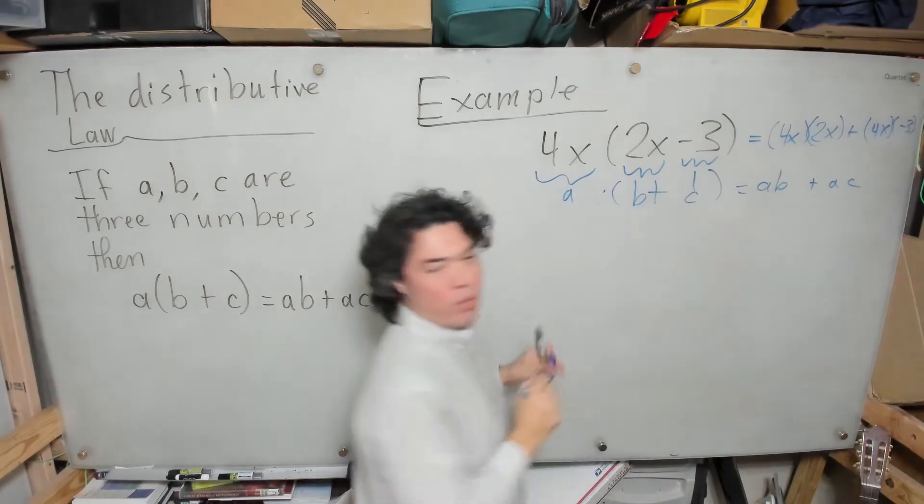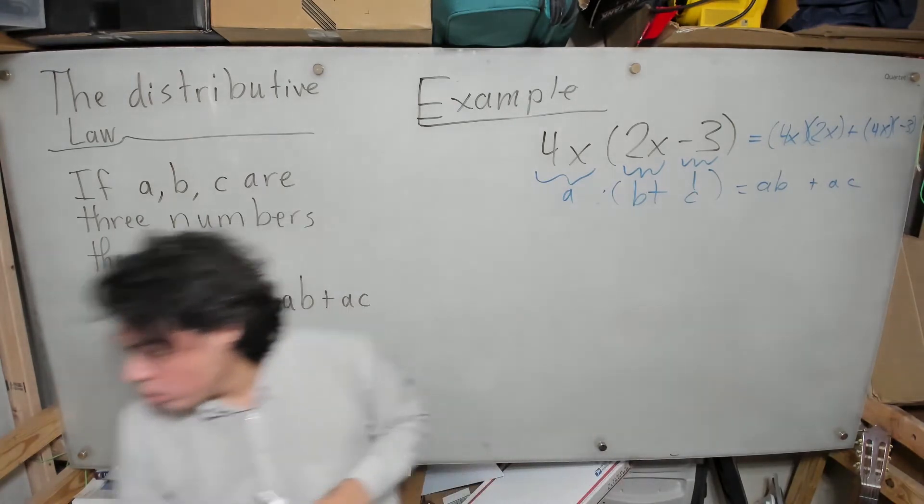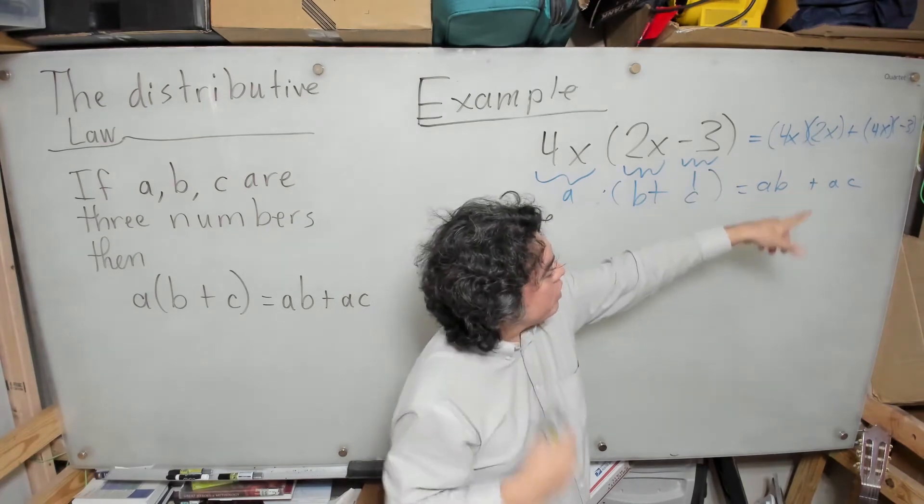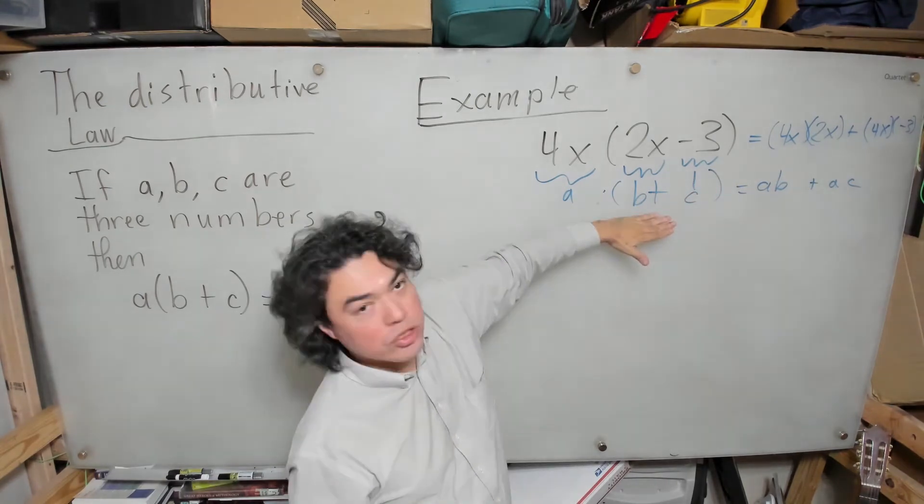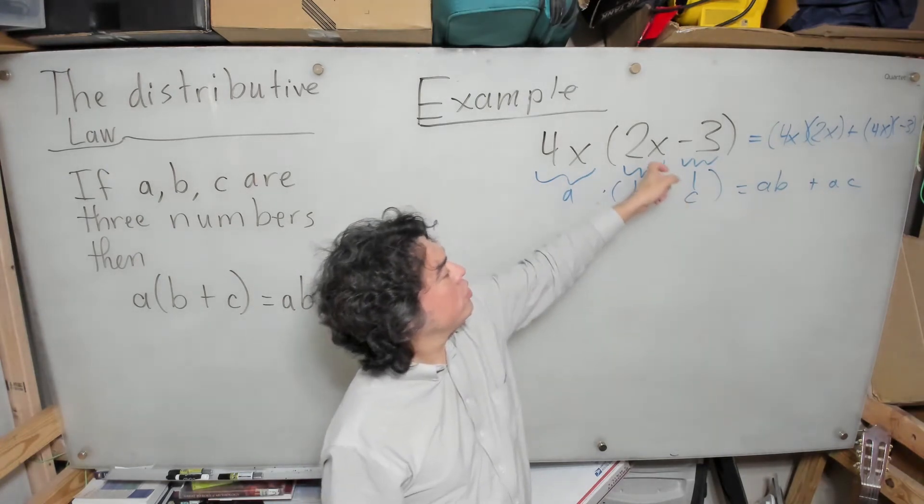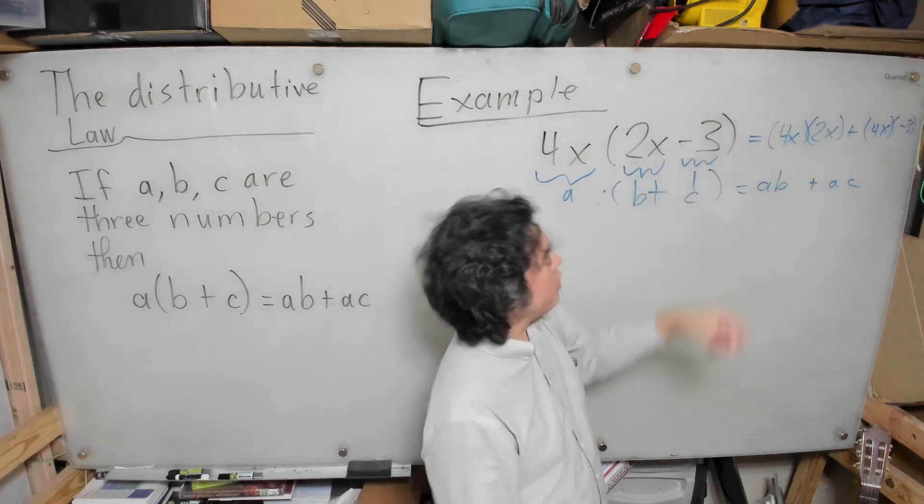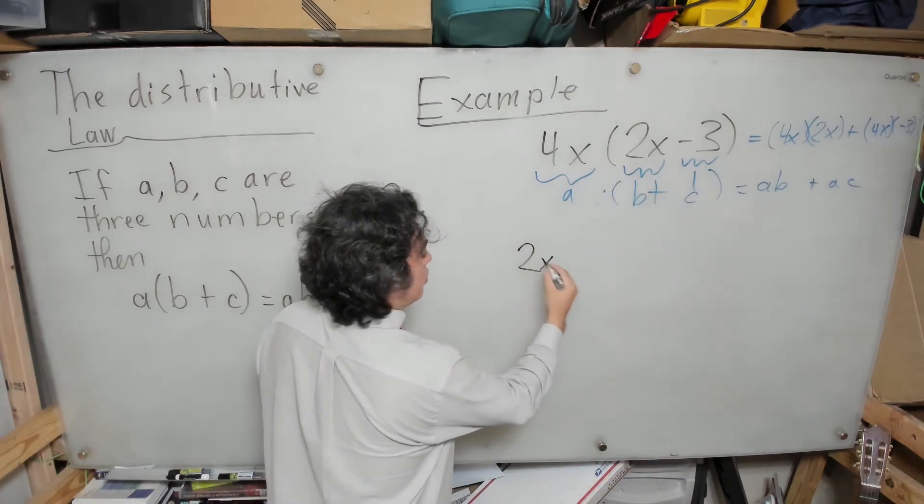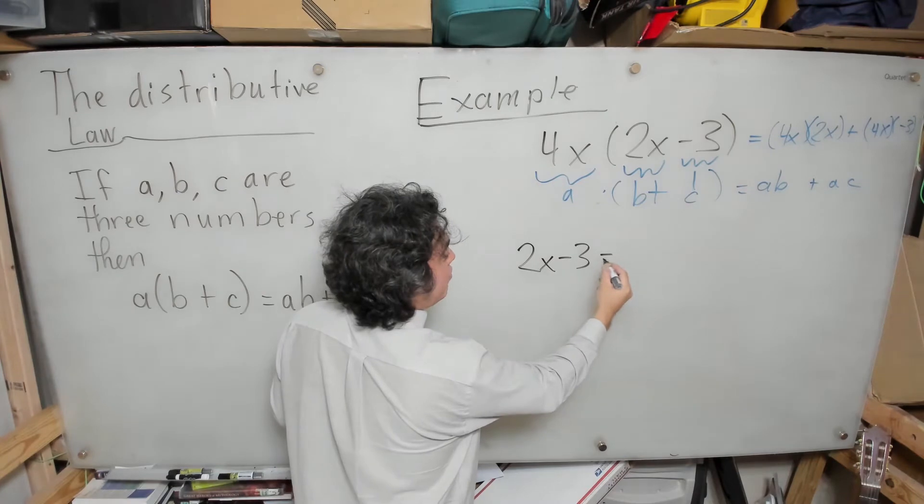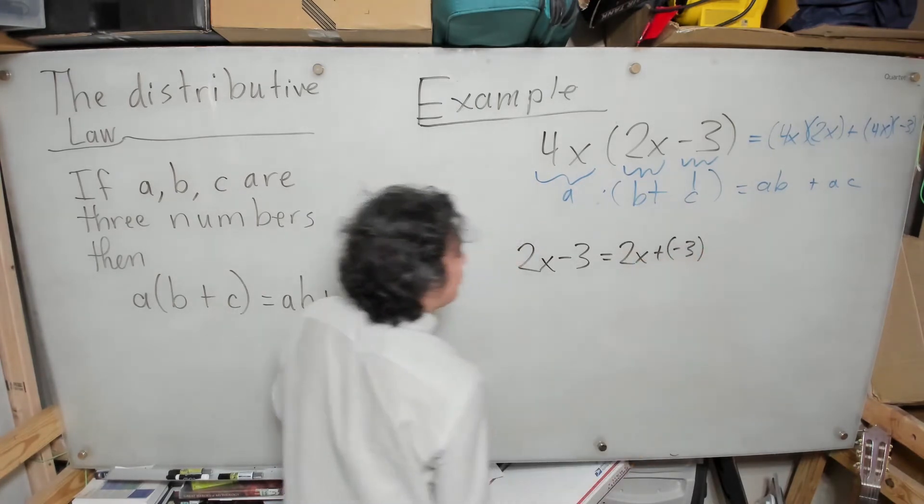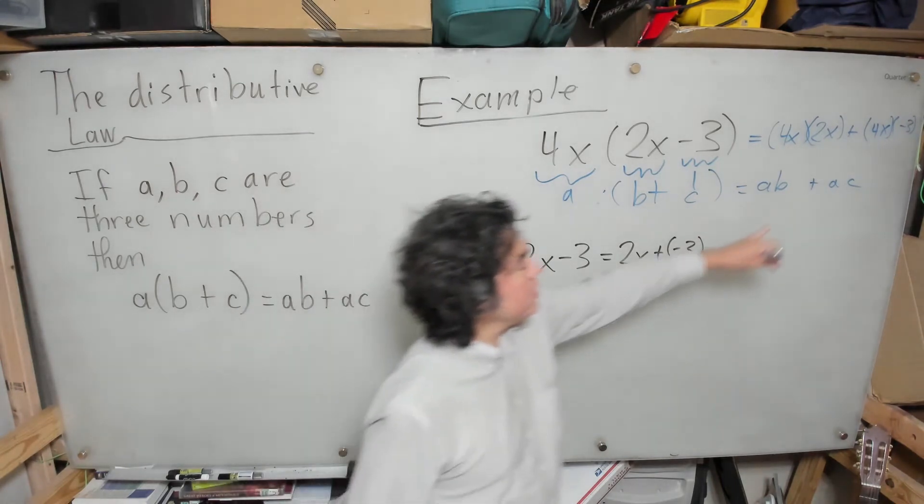By the way, I want to make a point about this. You might say, 'David, how is it that it's minus 3 in the c?' It's because if we look at our distributive law, it's written as a times (b + c). So here, 2x minus 3 is the same thing as 2x plus negative 3, and that's why I'm saying the c is negative 3.